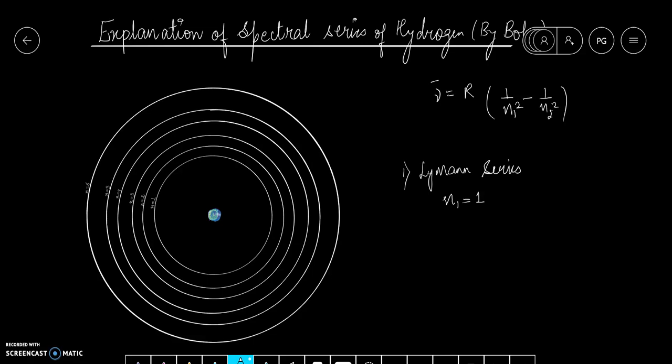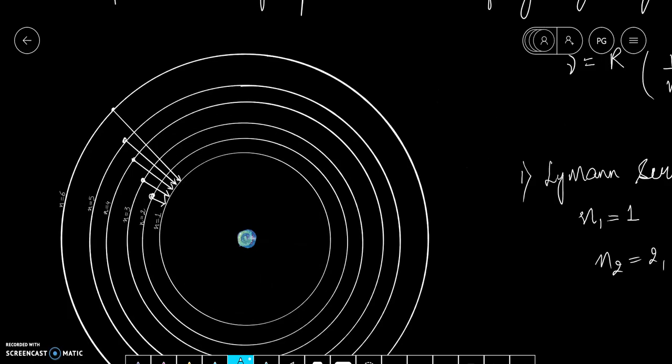The first series is Lyman series, that is when n1 equals 1. When the inner orbital is 1, and n2 can have any integral value, this means that the electron is jumping to first orbit, like this.